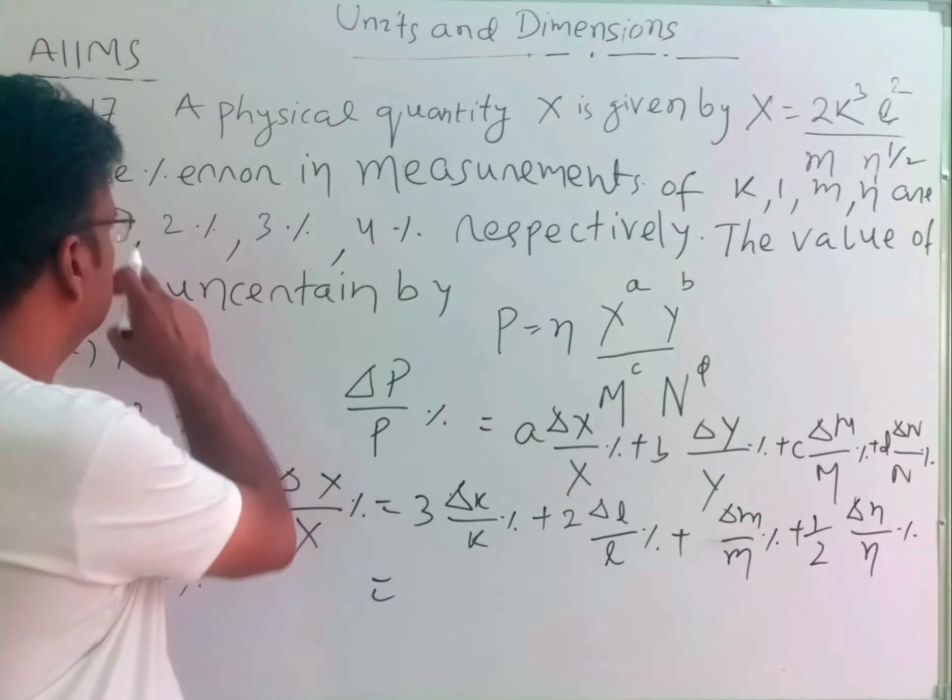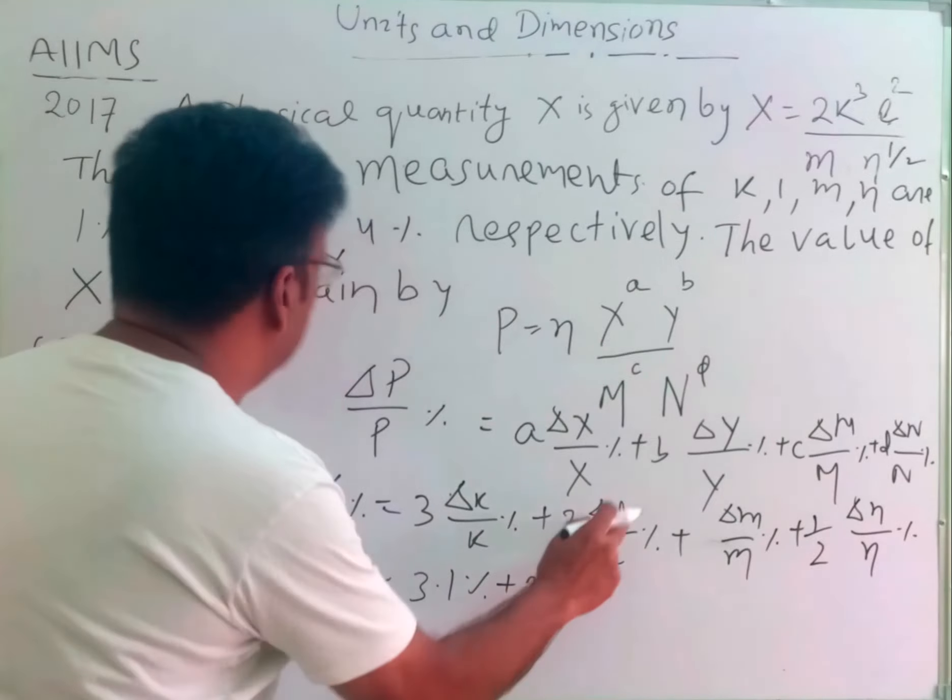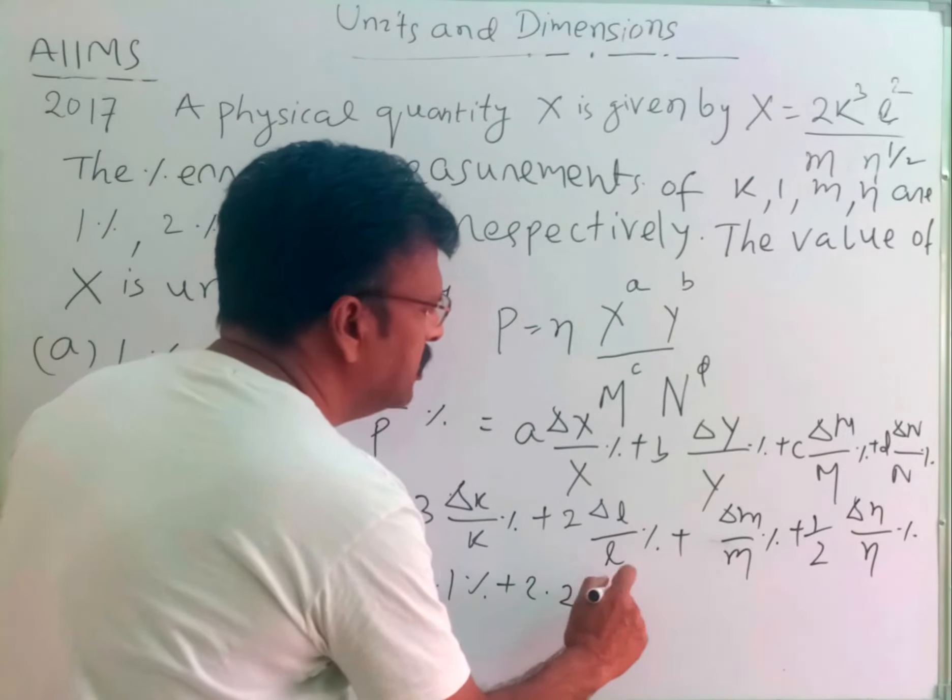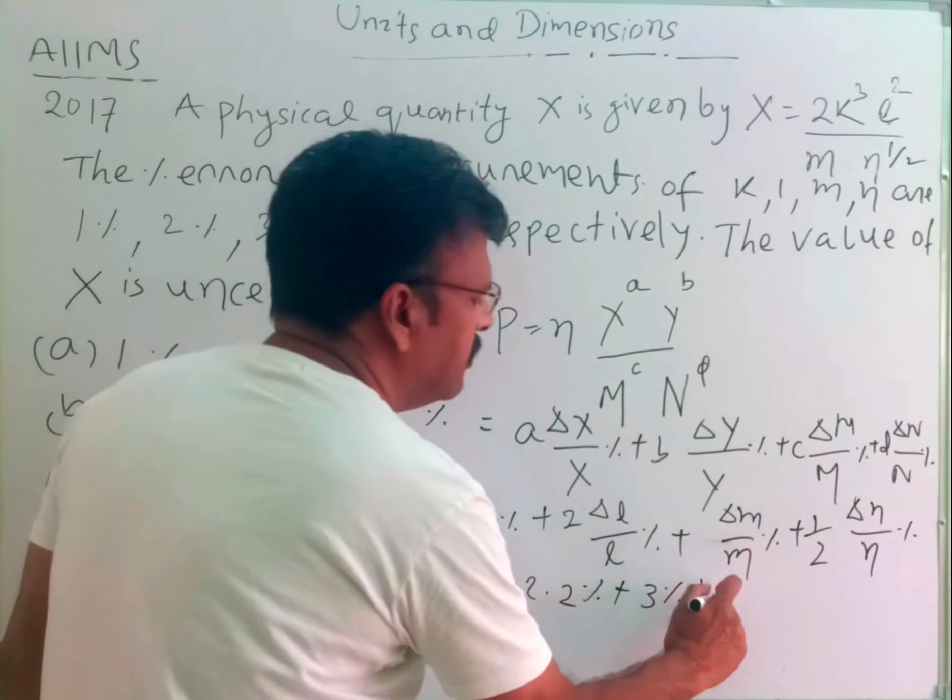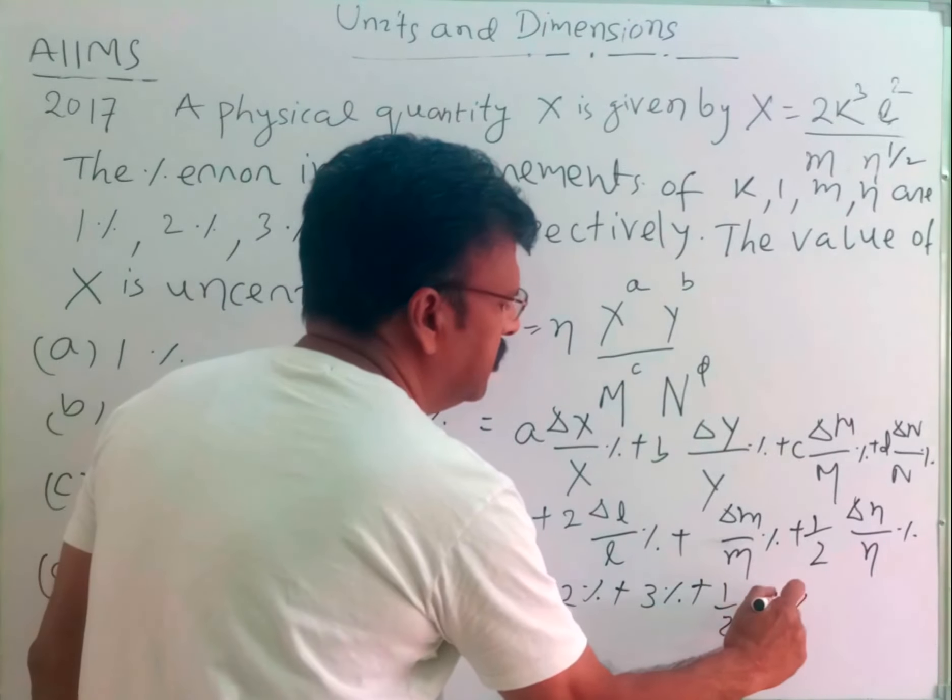We know what is ΔK/K percent, that is given 1%, so 3 into 1% plus 2 into ΔL/L given students 2%, then ΔM/M is given 3%, plus 3%, plus half into ΔN/N given students 4%.